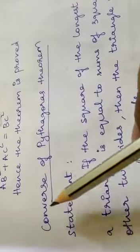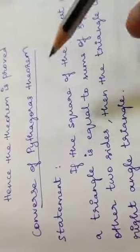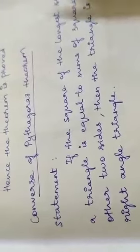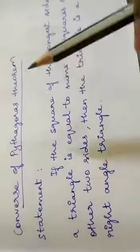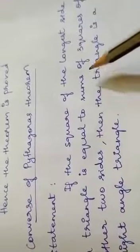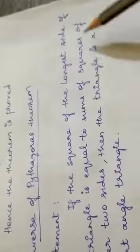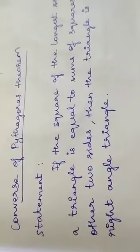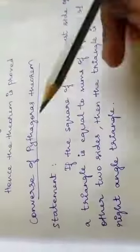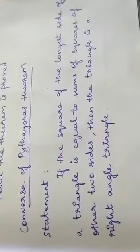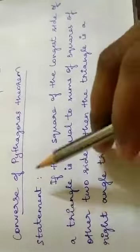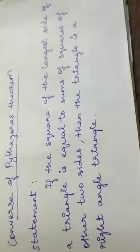Now let us see the converse of Pythagoras theorem — just the statement only, no proof, no given or construction. The statement is: if the square of the longest side of a triangle is equal to the sum of the squares of the other two sides, then the triangle is a right angle triangle.